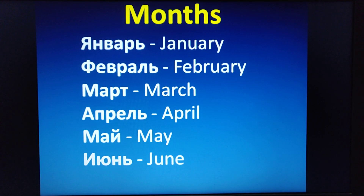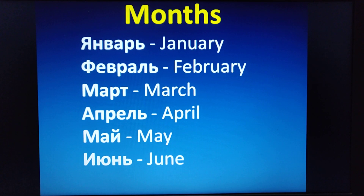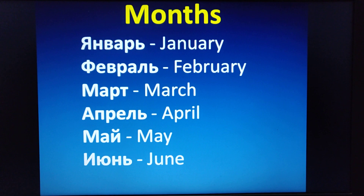And now the months. Yanvar for January. Febral for February. Mart for March. April for April. May for May. June for June. You can repeat again: Yanvar. Febral. Mart. April. May. June.